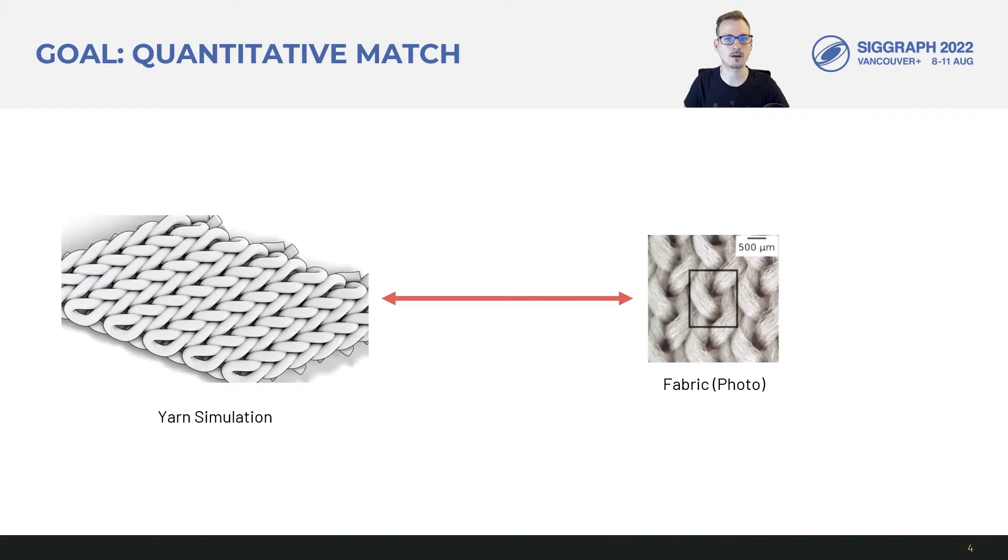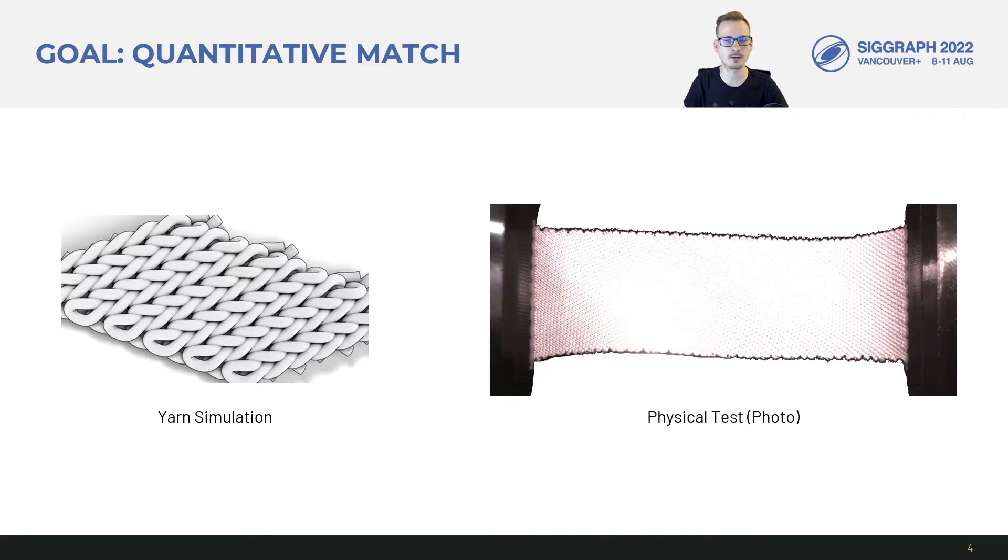Our goal is to find yarn material parameters such that a yarn-level simulation would reproduce the large-scale fabric behavior quantitatively with respect to physical measurements from standardized testing. This is a step towards creating predictive yarn-level simulation models which could open up novel applications in textile materials.